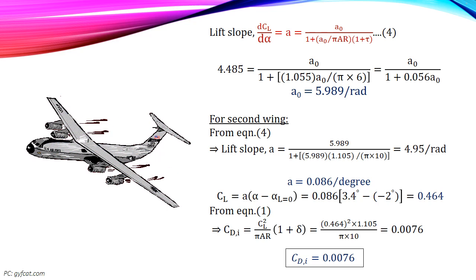Now substitute the value of wing lift slope of second wing in equation number 3. We get the lift coefficient for the second wing is 0.464.